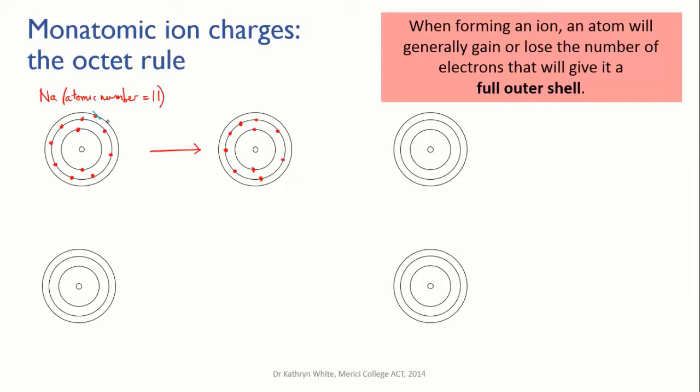And if it loses one electron, that means it now has one more proton than electron, which means it has a charge of plus one. So the ion that sodium forms is a plus one charged ion and we write it Na+.